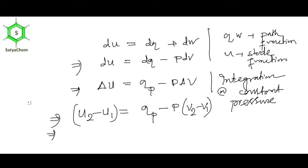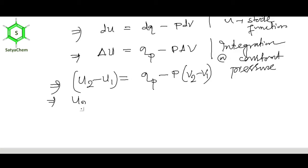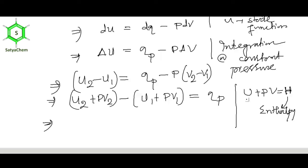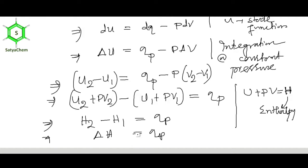Rearranging the equation, we find that U + PV — the sum of internal energy and PV work done — is defined as enthalpy, H. This is a new state function. So it becomes H2 − H1 = qp, or delta H = qp. In differential form: dH = dqp.